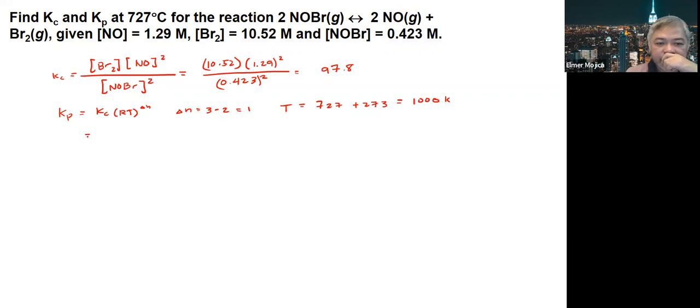If we replace the values, 97.8 times 0.0821 times 1,000 Kelvin raised to the 1 gives you approximately 8.03 times 10 to the 4.